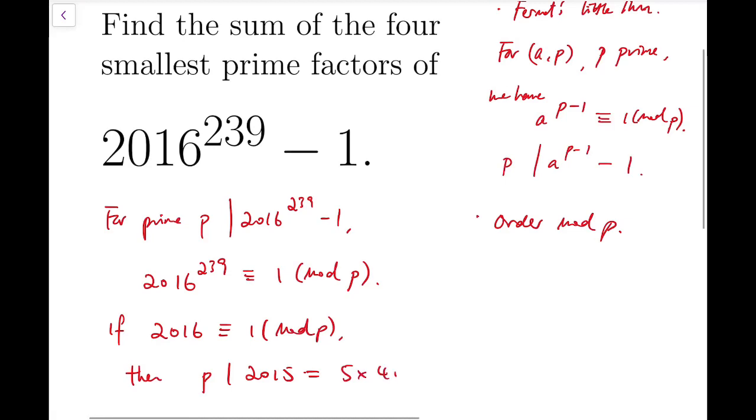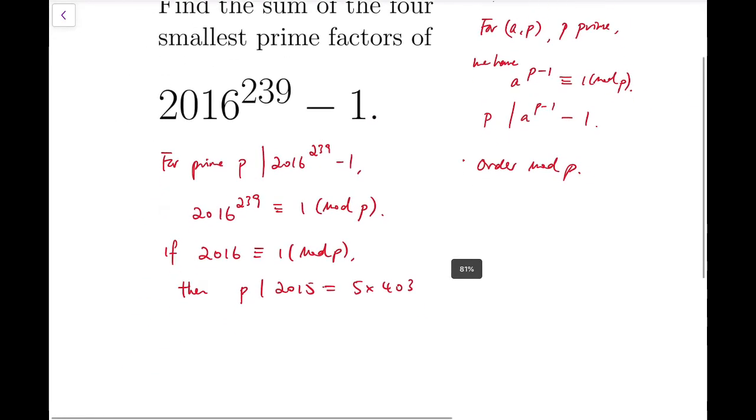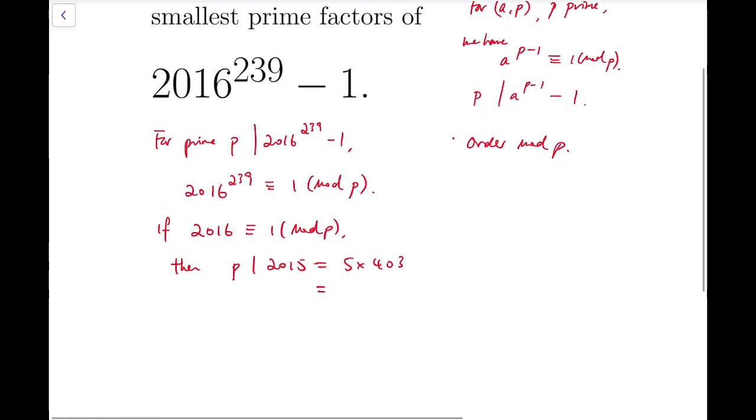And that's actually 5 times 403. And 403 can be further factorized into 13 times 31.